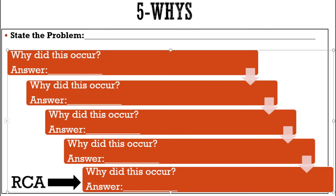You first establish the problem statement that you encountered and then ask why the problem happened. When you derive the answer, you ask again why that must have happened and reach a deeper, next immediate cause. By continuing this process and posing the question five times, you are likely to arrive at the logical root cause.